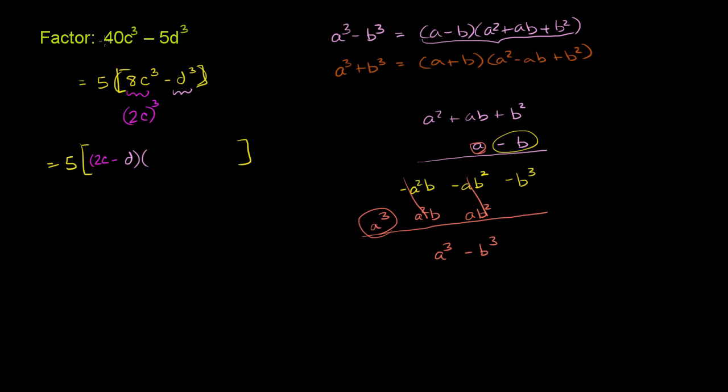a, let me write it down here. a in our example, a is equal to 2c. And in our pattern, b is equal to d. So if we have a squared, that's 2c squared, or that's 4c squared. Or 2 squared times c squared, either way. Minus a times b, so minus 2cd. And then plus b squared, so plus d squared.